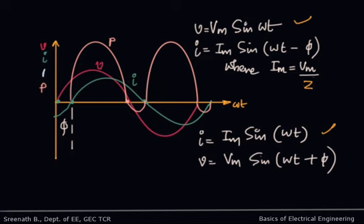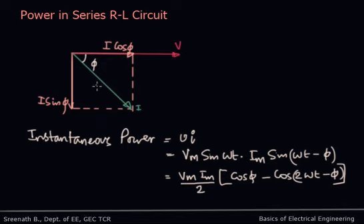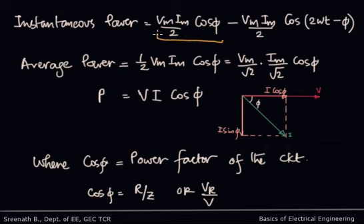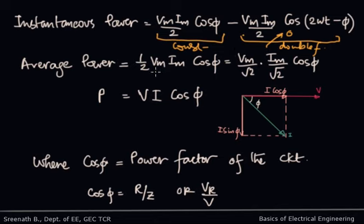For power in an RL series circuit, the current can be resolved into two components: I cos φ, the in-phase component with voltage, and I sin φ, the quadrature component. Instantaneous power p = v × i = Vm sin(ωt) × Im sin(ωt − φ), which can be written as (Vm·Im/2)[cos φ − cos(2ωt − φ)]. This has a constant part and a double-frequency component. The average of the double-frequency component is zero, so average power P = (Vm·Im/2)cos φ = V·I·cos φ in RMS terms.